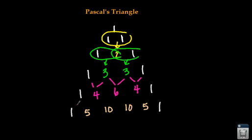And then we have 1 plus 4 is 5, 4 plus 6 is 10, and so on. So this is how we know the values on the triangle. So let's do the next row together.